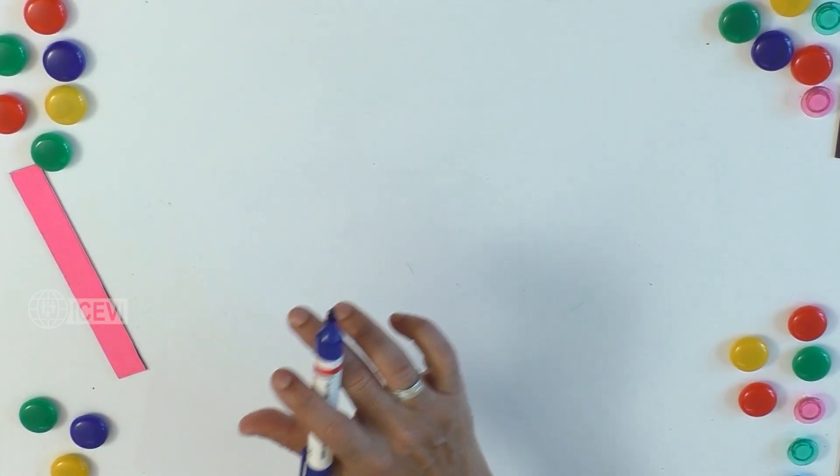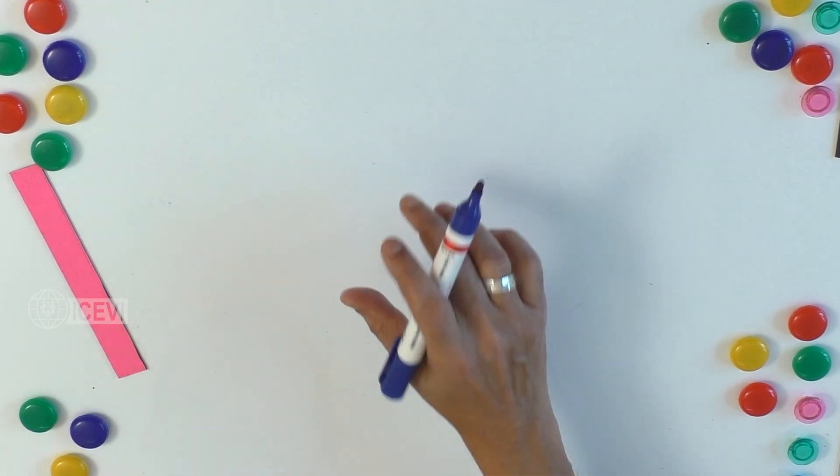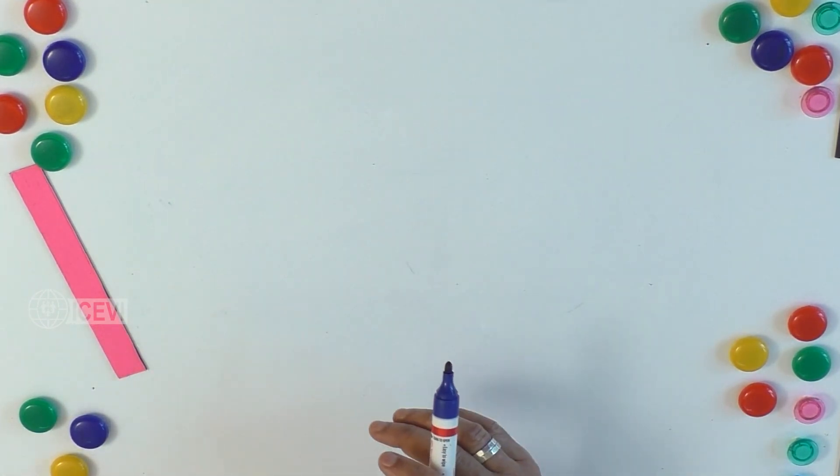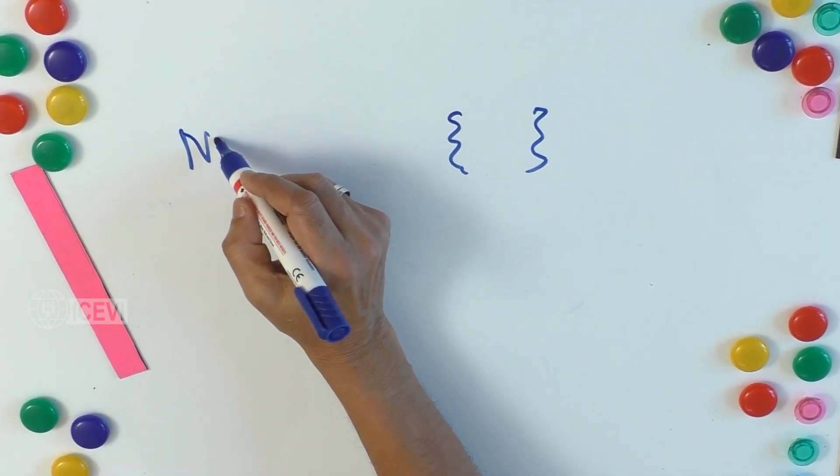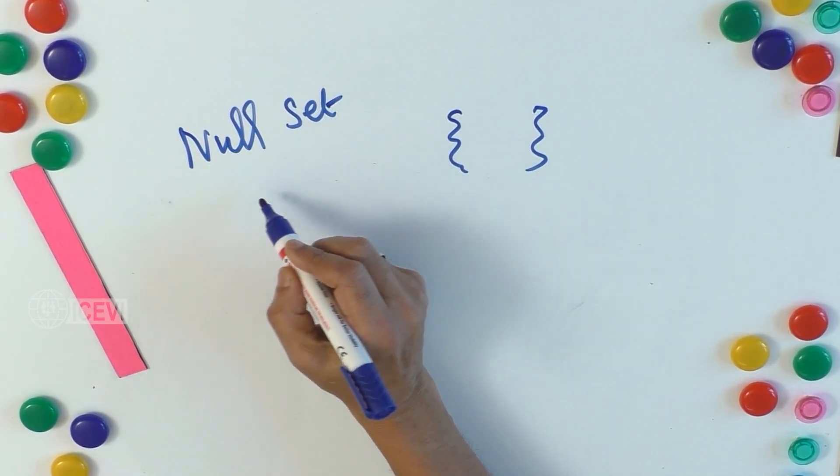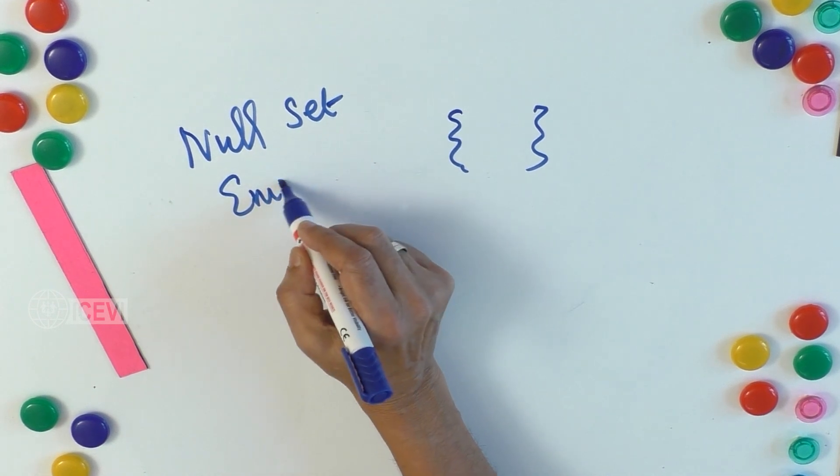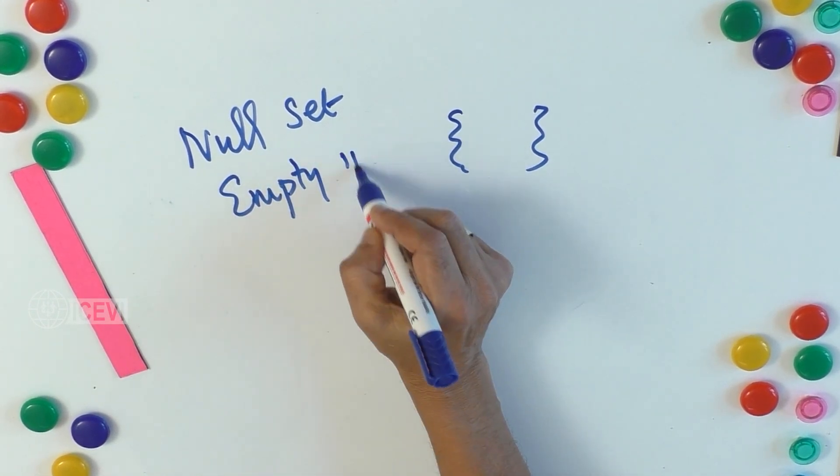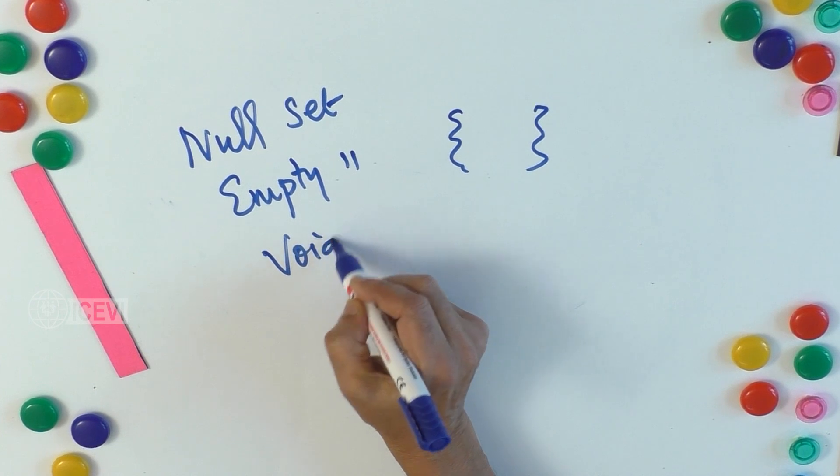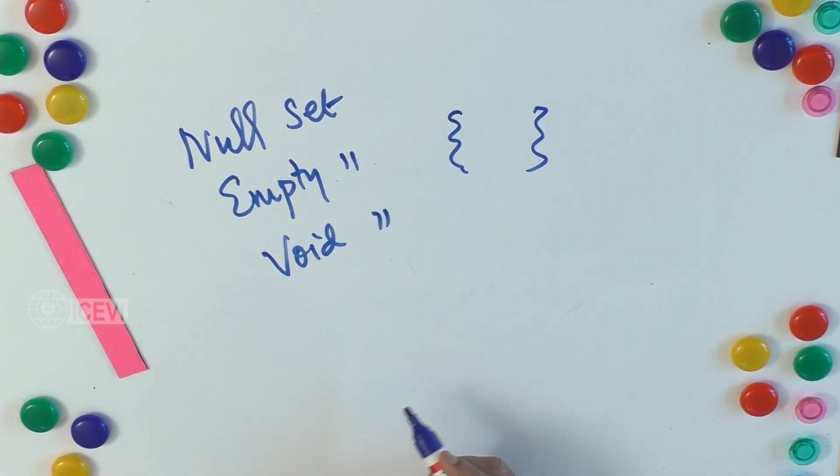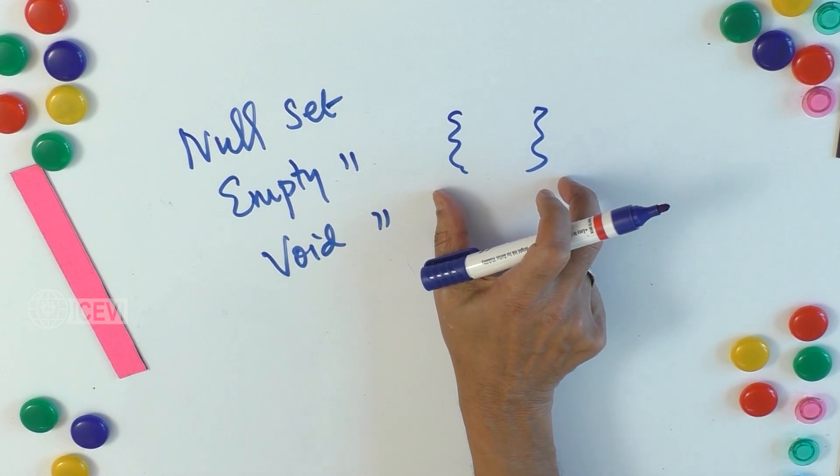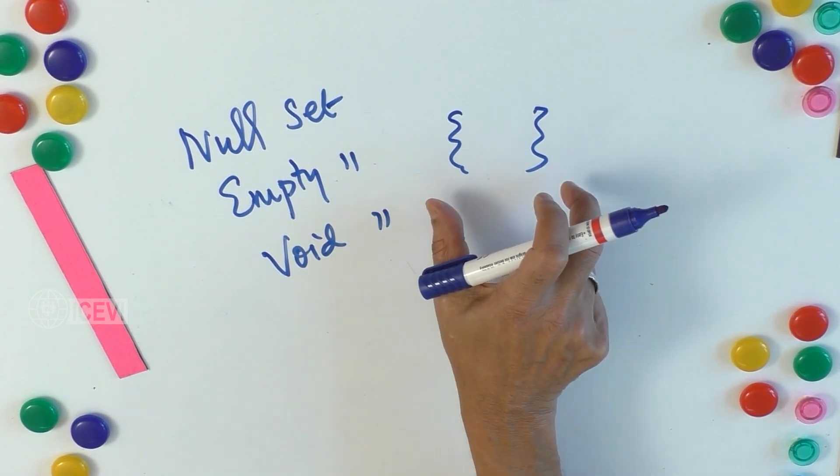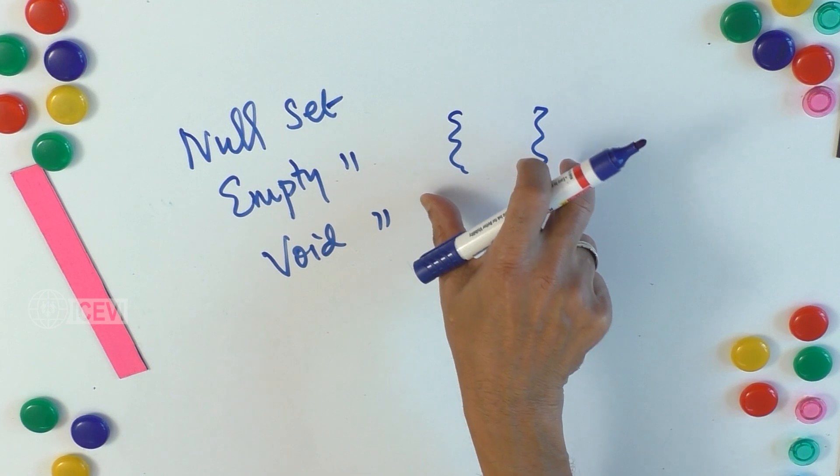We have to define some more terminology before we get into the higher level of set theory. There is one set which is called null set. It is also called empty set or void set. We consider that as a set even though there may be no elements in that.